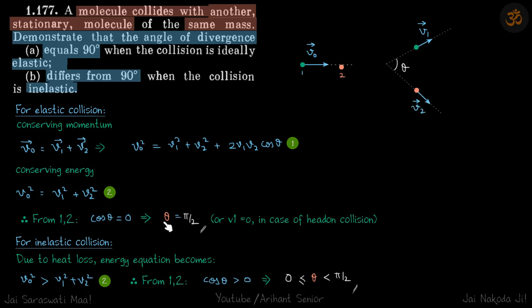So this proves that for elastic collision between two particles, the angle of divergence is always pi by 2. Now for inelastic collision, due to heat loss the energy—the first equation will remain the same because that is momentum conservation.